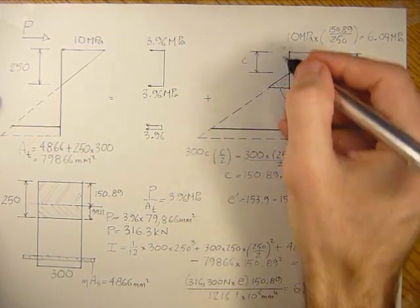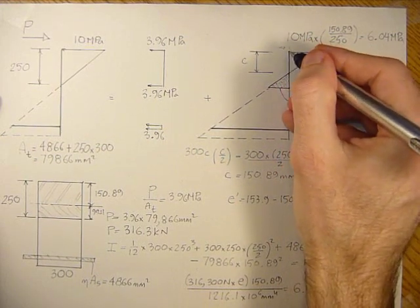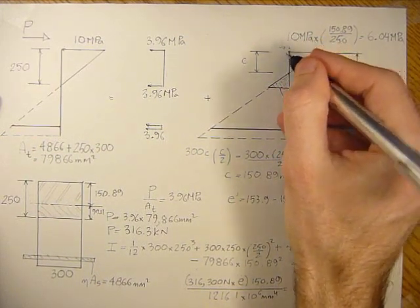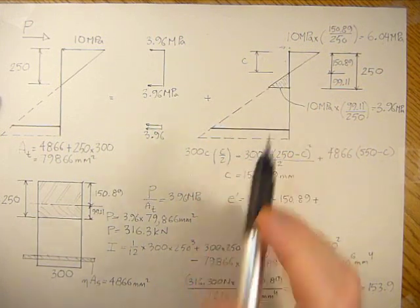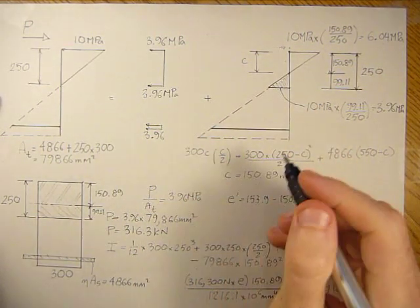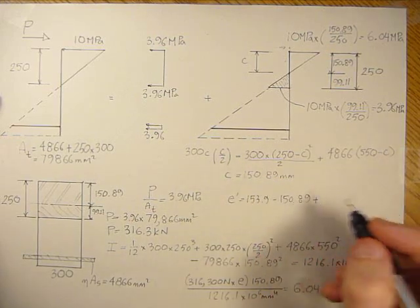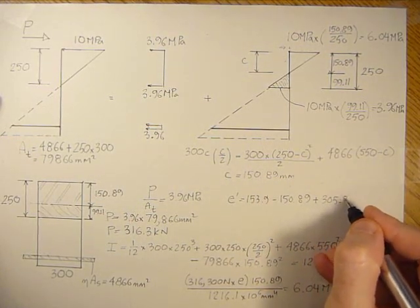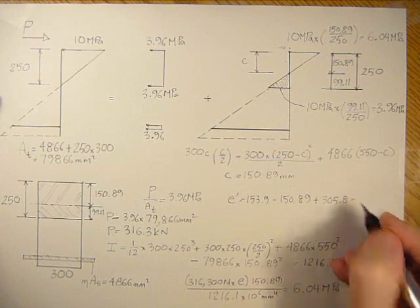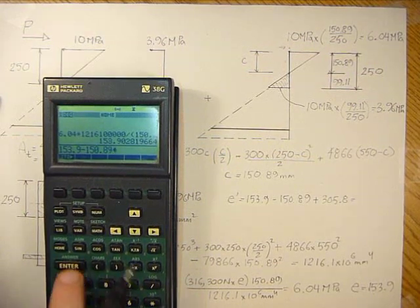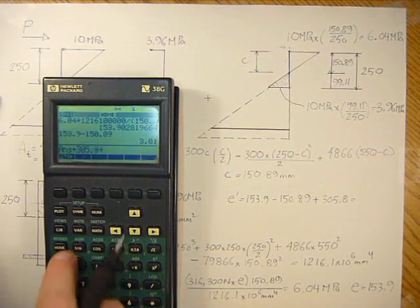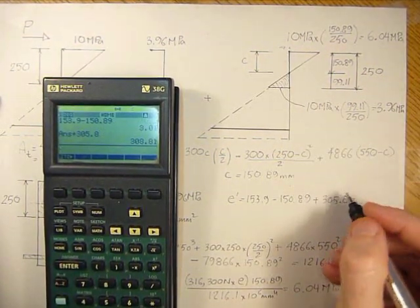That's going to give us the distance from here to here, and then we add back the 305.8 to get the e prime eccentricity. So 153.9 minus 150.89 plus 305.8 - that's 308.81.